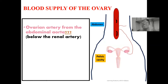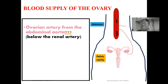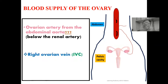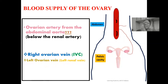The venous drainage of the ovary on the right side and on the left side are different. On the right side, the right ovarian vein is drained directly into the inferior vena cava, while the left ovarian vein is drained first into the left renal vein before it is finally collected into the inferior vena cava.